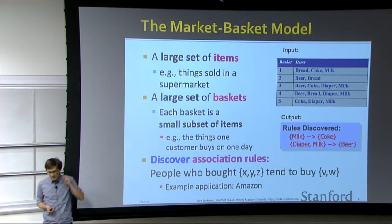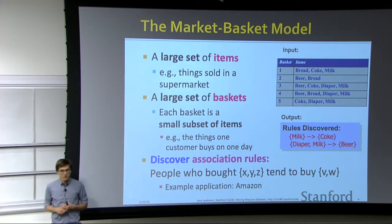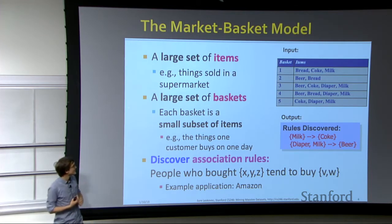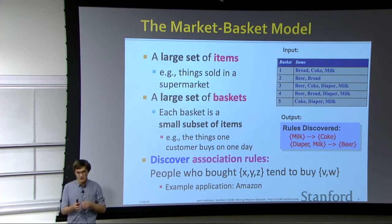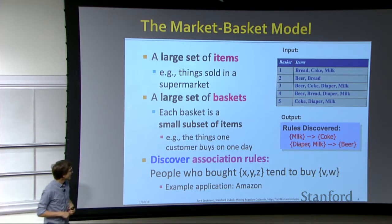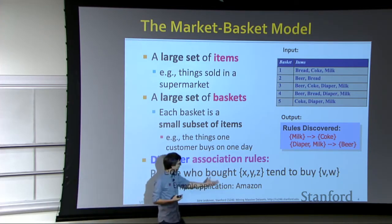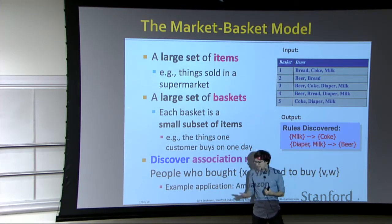So how are we going to think about this? We have a large set of items — products sold in a supermarket, or all the songs on Spotify. Then we have a large set of baskets, and each basket contains a subset of items. When you go to Whole Foods and put items in your cart, that's your basket. Or when you put songs together in a playlist, the playlist is your basket. We want to identify association rules: people who bought X, Y, and Z tend to also buy V and W.